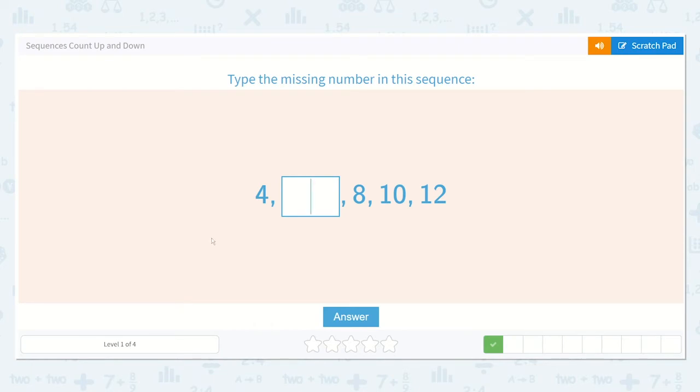Now they want us to type the missing number in this sequence. Let's see. We have 4, a number, 8, 10, 12. I see. So now we're not counting up by ones anymore. It is not going 4, 5, 6, 7, 8. Instead, we're going up by 2. So each time we're adding 2.